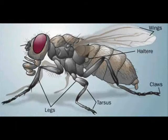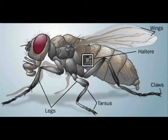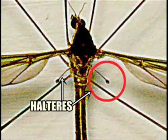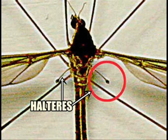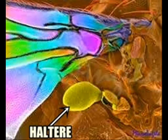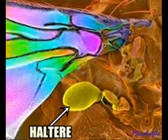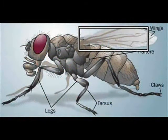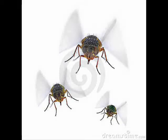Though flies appear to have only one pair of wings, closer inspection reveals the presence of tiny secondary wings located below the main pair. These are called halteres and are used to maintain balance in the air. If one haltere is removed, the insect can only fly in circles. Without either haltere, the fly cannot take to the air at all. The primary wings provide enough power and precision for instant lift-off and complicated flight movements.